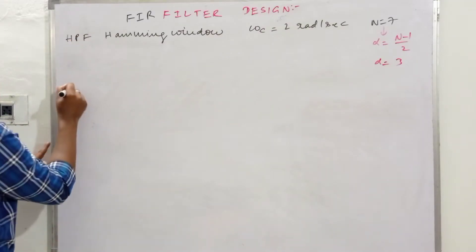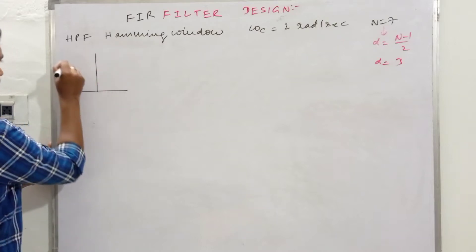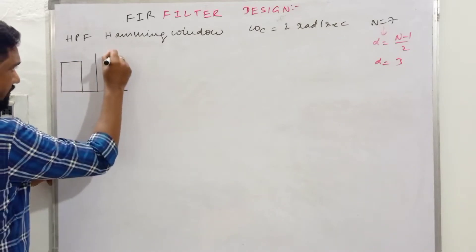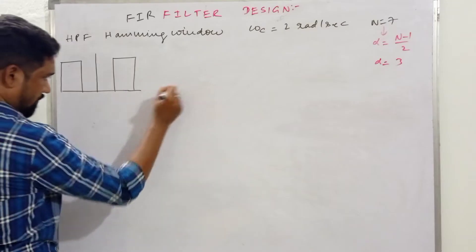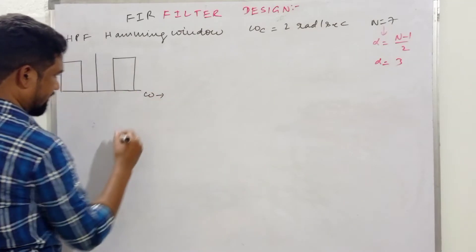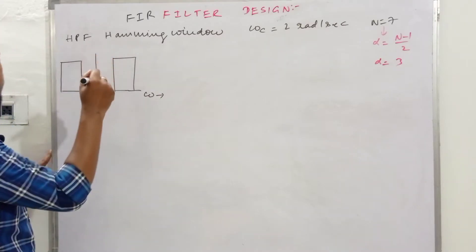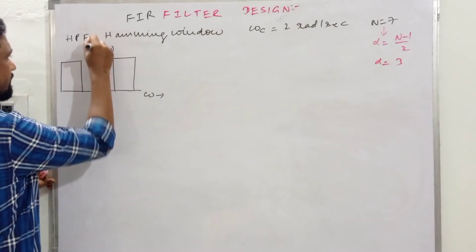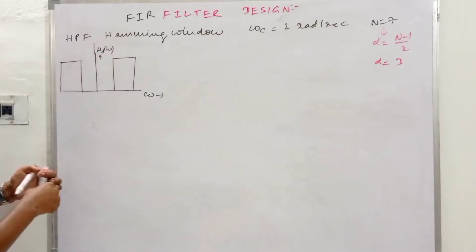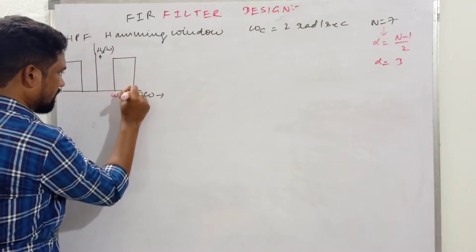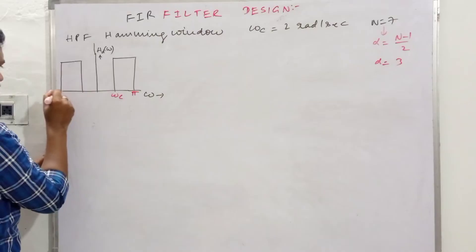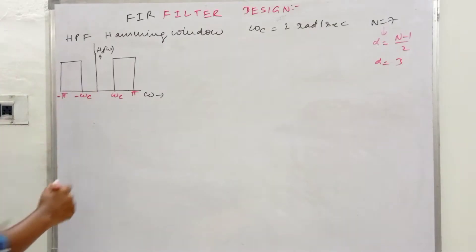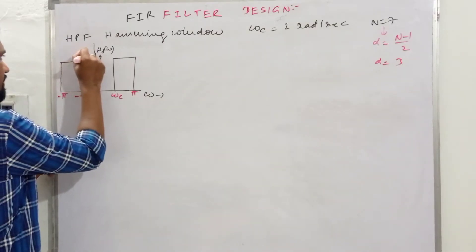For a high-pass filter, the desired frequency response H_D(ω) is non-zero for ω from Ω_c to π and from −π to −Ω_c. The magnitude is unity — we always design for unity magnitude filters.